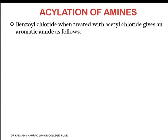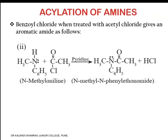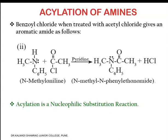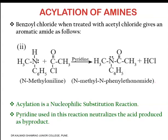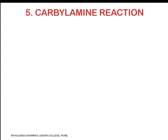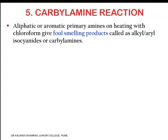N-methylaniline on treatment with acetyl chloride in the presence of pyridine gives N-methyl-N-phenyl ethanamide. The hydrogen from the amine and chlorine from the acetyl chloride combine and condense out to form the byproduct HCl, forming a new nitrogen-carbonyl bond — that is, the amide linkage. Acylation is a nucleophilic substitution reaction, and pyridine neutralizes the acid produced as a byproduct.